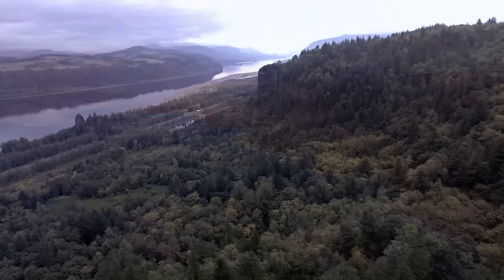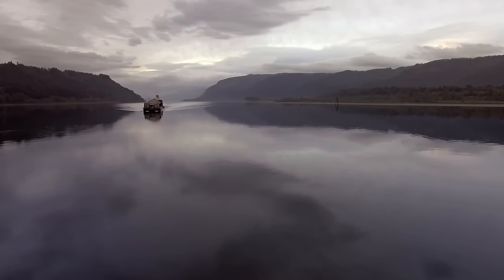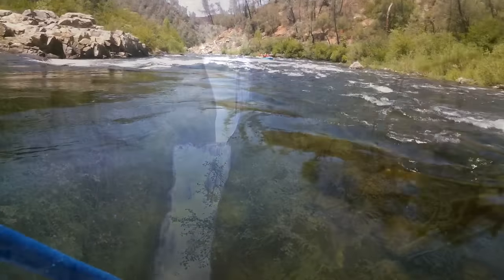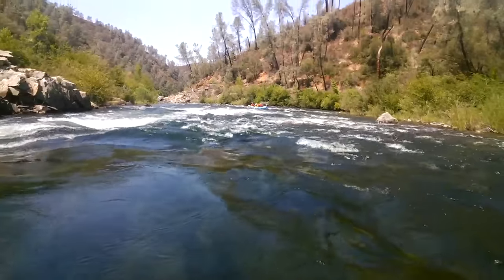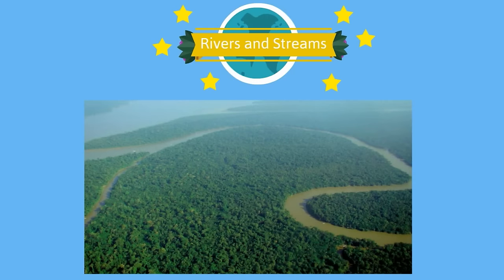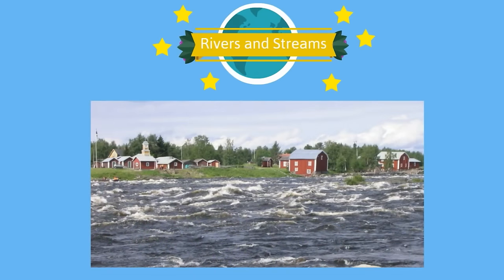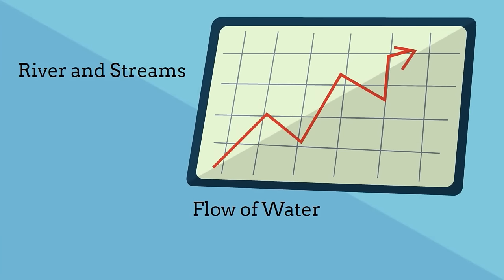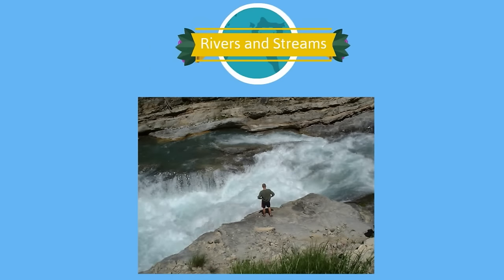The water in rivers and streams flows in one direction, beginning at the source called a headwater and traveling to the mouth where the flowing water empties into a larger body. The slope of the landscape determines the direction and speed of the water flow. When the slope is steep, water flows quickly; when it is not as steep, the water slows down. The currents and turbulence of fast moving rivers and streams prevent much accumulation of organic materials.